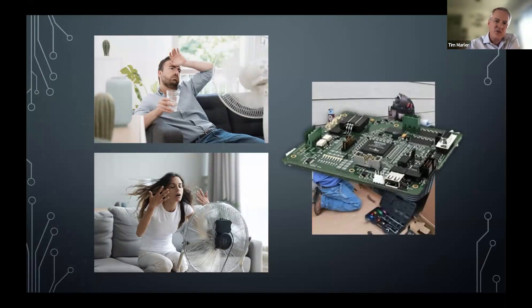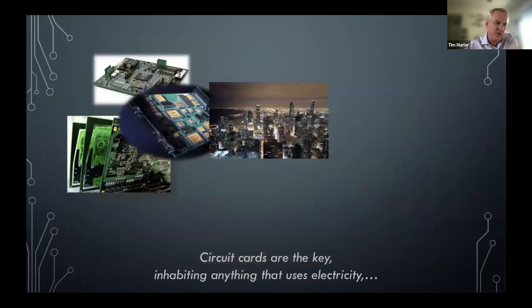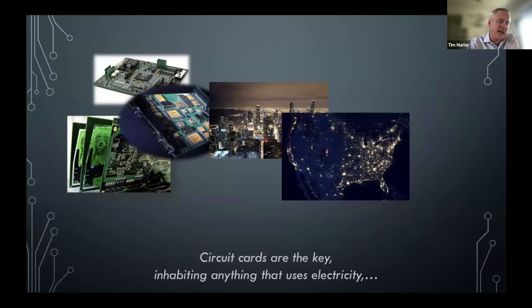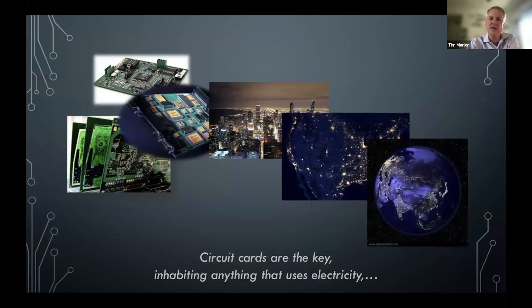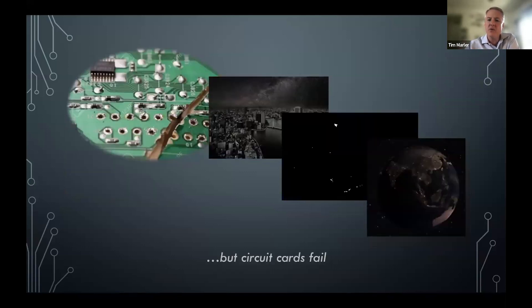So that's one specific problem that agitated my personal weekend, but circuit cards really are inhabiting anything that's got electricity running through its veins. Anything that does anything for you probably has some form of a circuit card in it, and when they break, the lights go out.